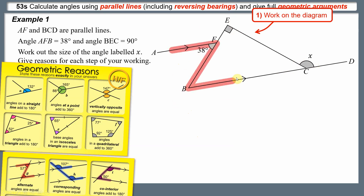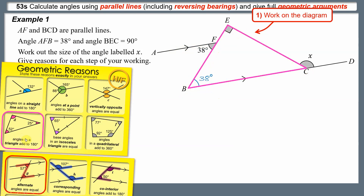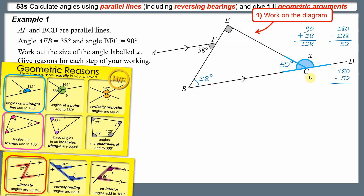We can spot a Z shape for alternate angles between AFB and FBC, so the angle FBC in the corner of the Z is 38 degrees. Now we've picked up two angles inside the triangle, and angles in a triangle add up to 180. Adding 90 and 38 gives 128, and 180 minus 128 leaves the third angle in the triangle as 52 degrees. Focusing on that corner, we have two angles on a straight line adding to 180, so 180 minus 52 gives us 128 — X is 128 degrees.